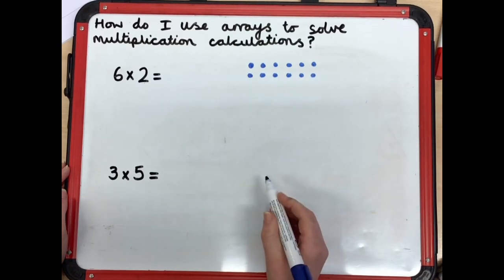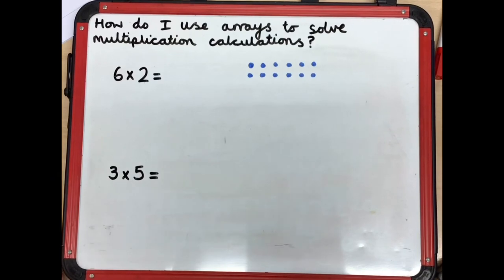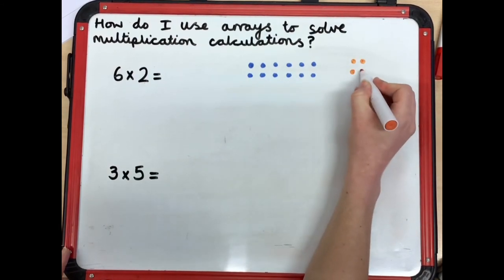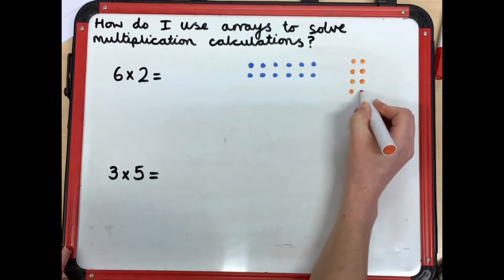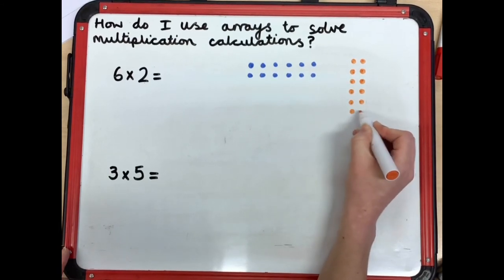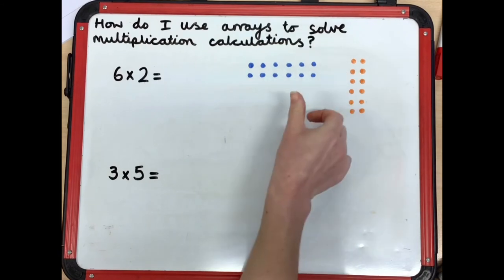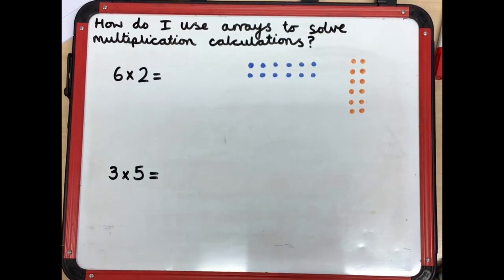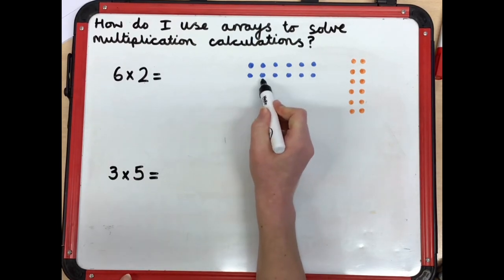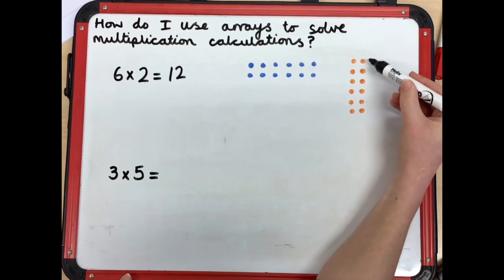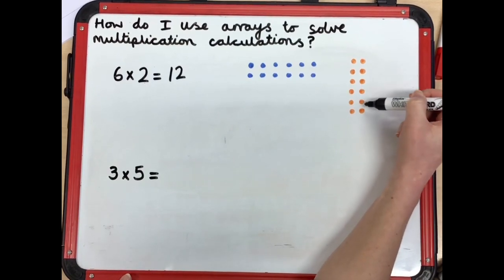I could also draw my array the other way round, like this: two groups, three groups, four groups, five groups, six groups — it's the same, just rotated. Let's find the answer by counting in twos: two, four, six, eight, ten, twelve. Let's check this array: two, four, six, eight, ten, twelve — twelve.